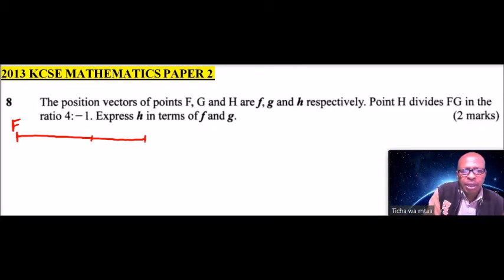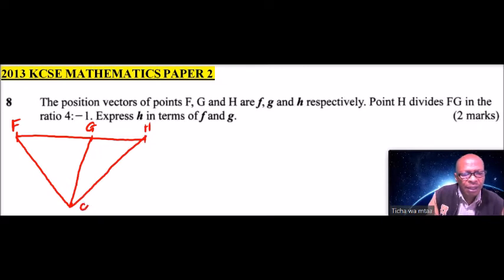So we correct that. So this is G and this is H. So we say this is a position vector. So we can draw the position vectors F, G and H. So this is the origin. So this is vector F. This is vector G. And this is vector H.